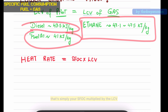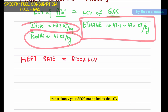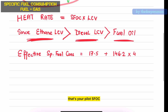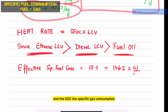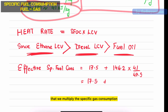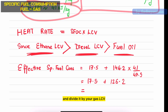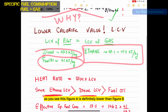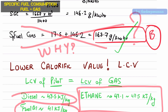The solution is the heat rate — that's simply your SFOC multiplied by the LCV. To calculate effective fuel consumption, take the pilot SFOC and the SGC (specific gas consumption) and convert using the LCV ratios. We multiply the specific gas consumption by the fuel oil LCV and divide by the gas LCV, which gives you an effective LCV. As you can see, figure A is definitely lower than figure B.